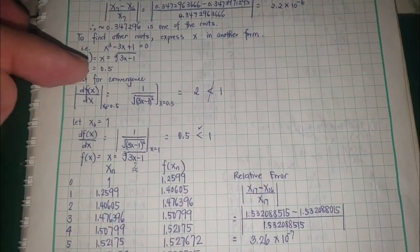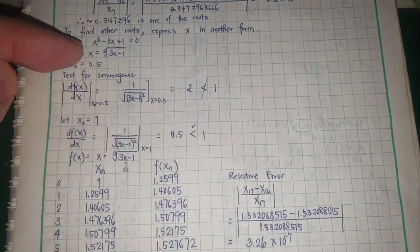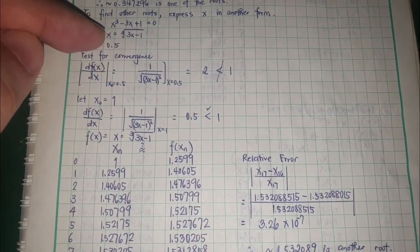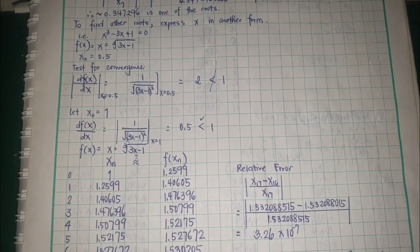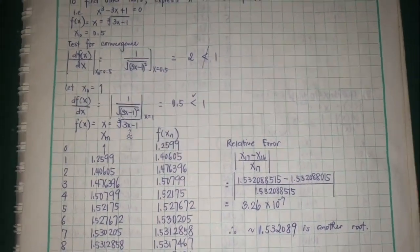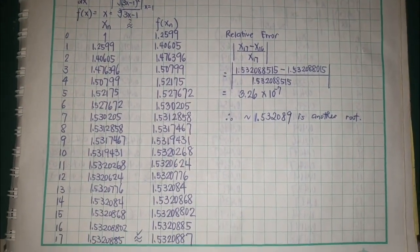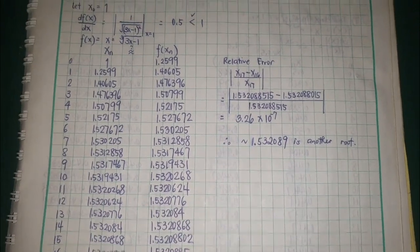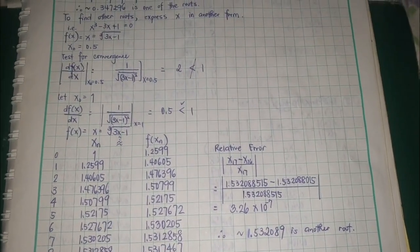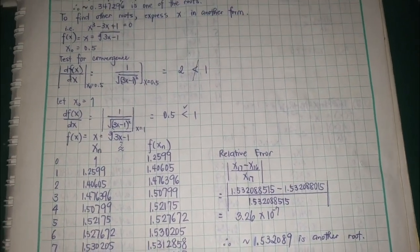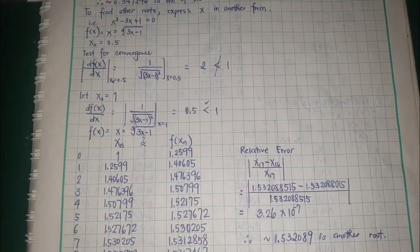Since the original given function is this, maybe you can isolate one of the x's here and make it the cube root of 3x - 1. For that one, you'd be able to get one answer. Or maybe try looking for other test values.